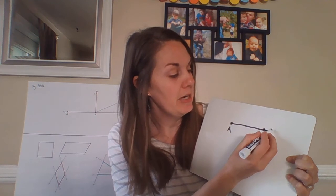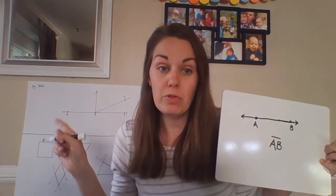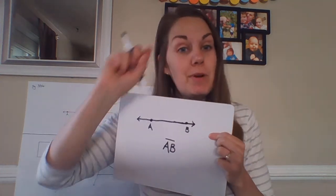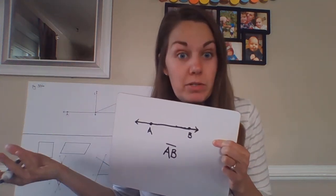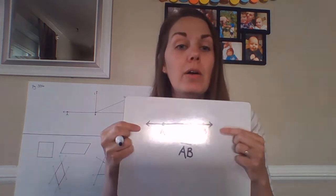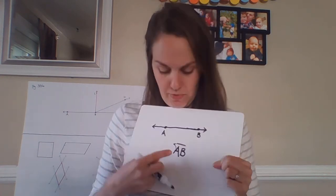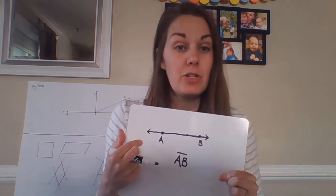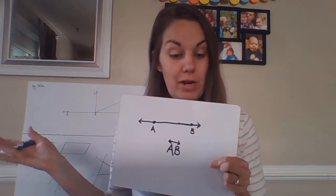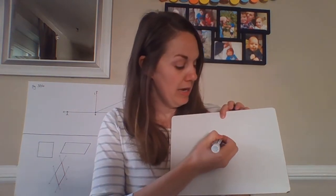A line is actually a series of points all traveling along the same path but going in both directions without end — like a number line. You have different points representing different numbers or fractions, and we could keep counting forever in either direction. A line segment would have a line over the letters A and B; a full line would add arrows to either side showing it goes in both directions forever.